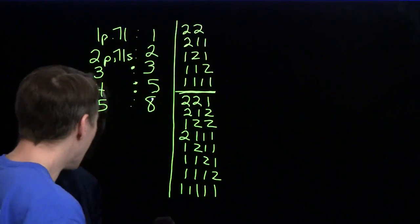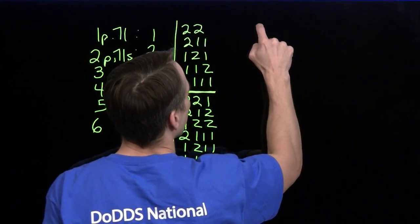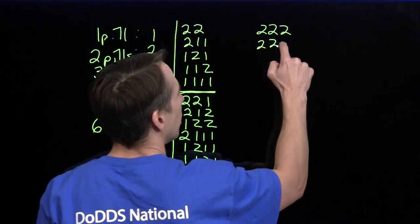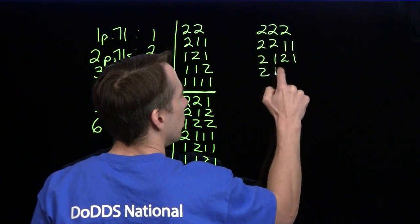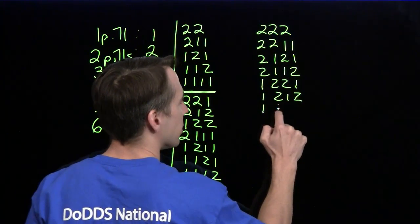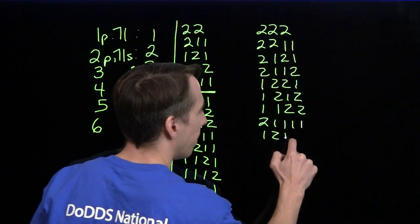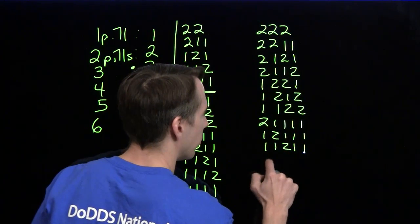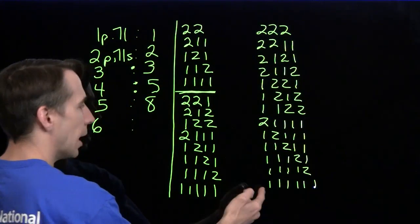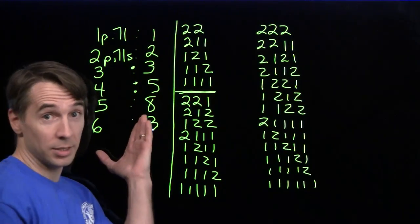Maybe you recognize these numbers — you kind of have a hint as to what's coming next. We're going to try it with six pills and list them all out: three twos; two twos and two ones in all orderings; one two and four ones; and just ones. Adding them all up, we get thirteen. Bet you saw that coming. You might recognize these numbers. These are Fibonacci numbers.